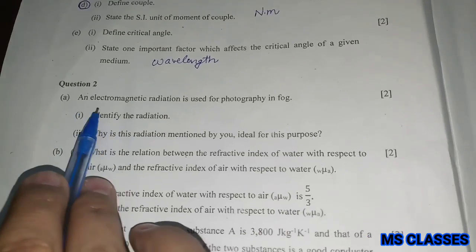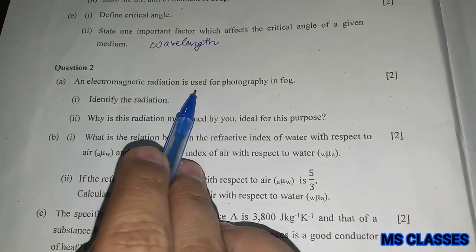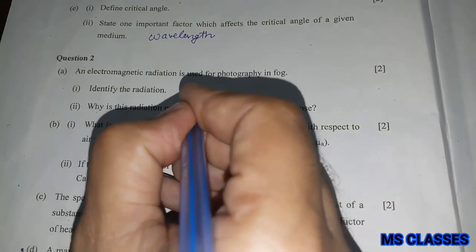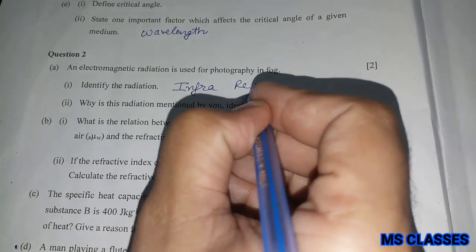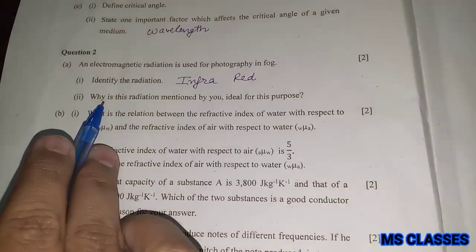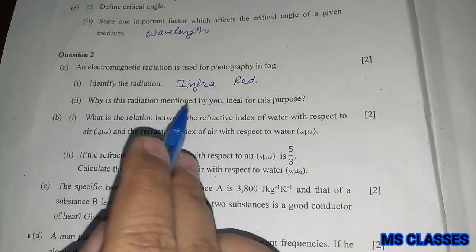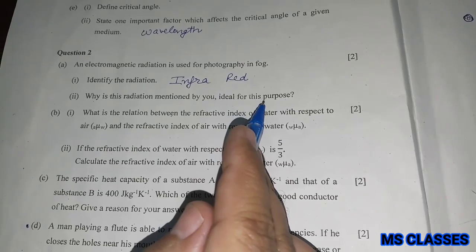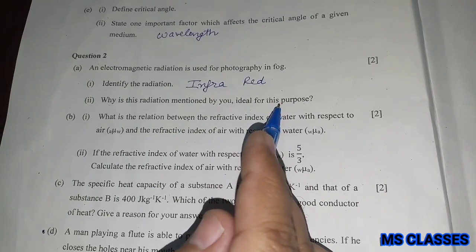Question 2, first part: An electromagnetic radiation is used for photography in fog. Identify the radiation. That is infrared radiation. Why is this radiation mentioned by you ideal for this purpose? Because they are not much scattered so they can penetrate appreciably through it.